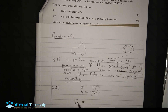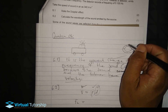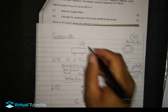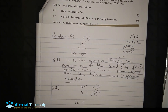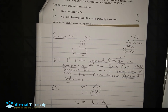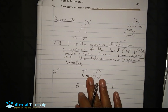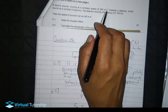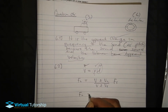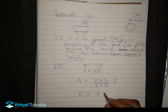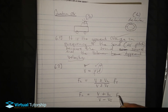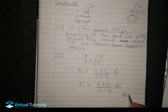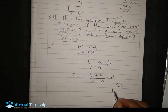The Doppler effect formula is: f_L equals f_S times (v plus or minus v_L) over (v plus or minus v_S). The listener here is the detector, and the source is the ambulance. Since the source is approaching the listener, we use plus in the numerator and minus in the denominator.